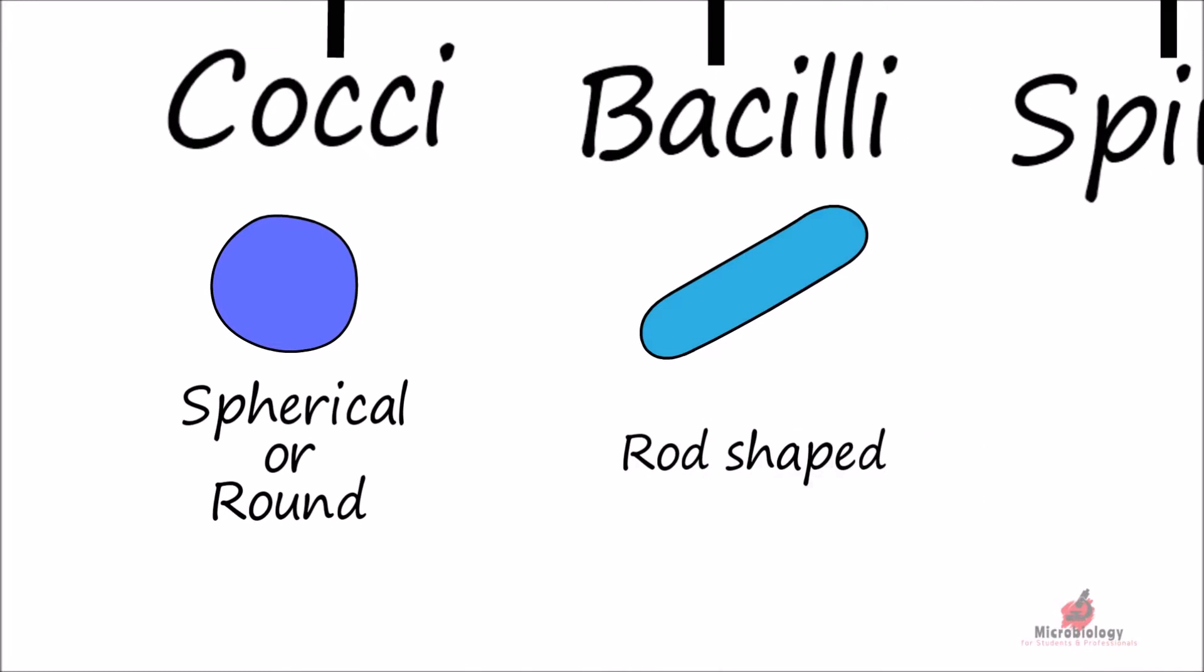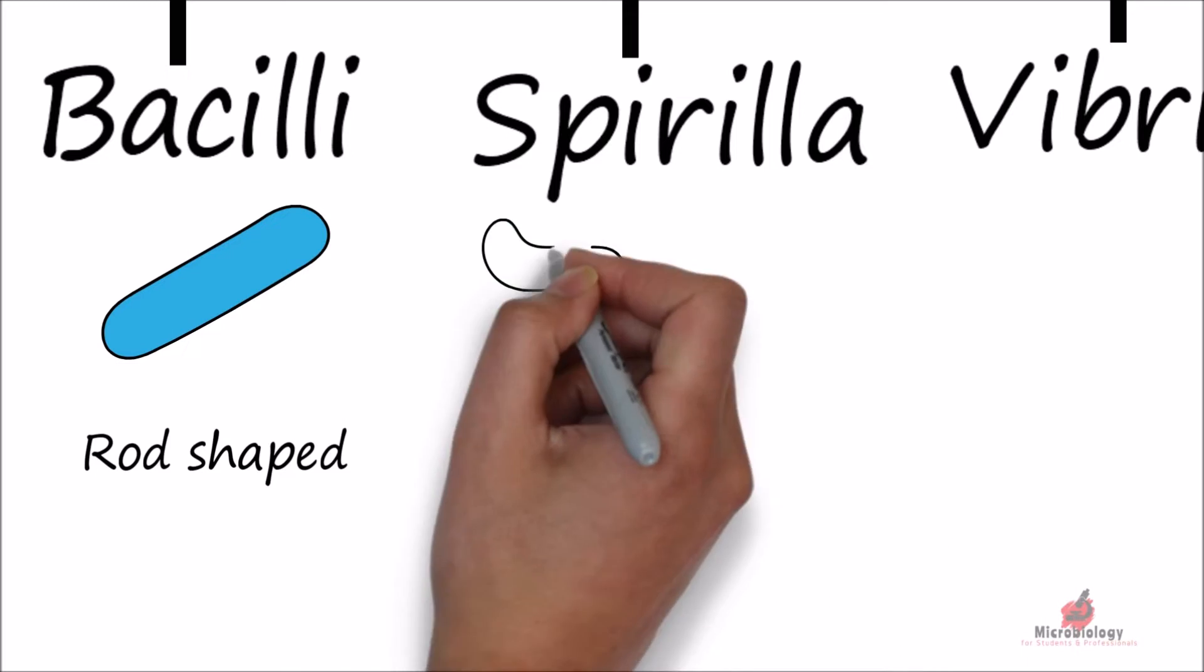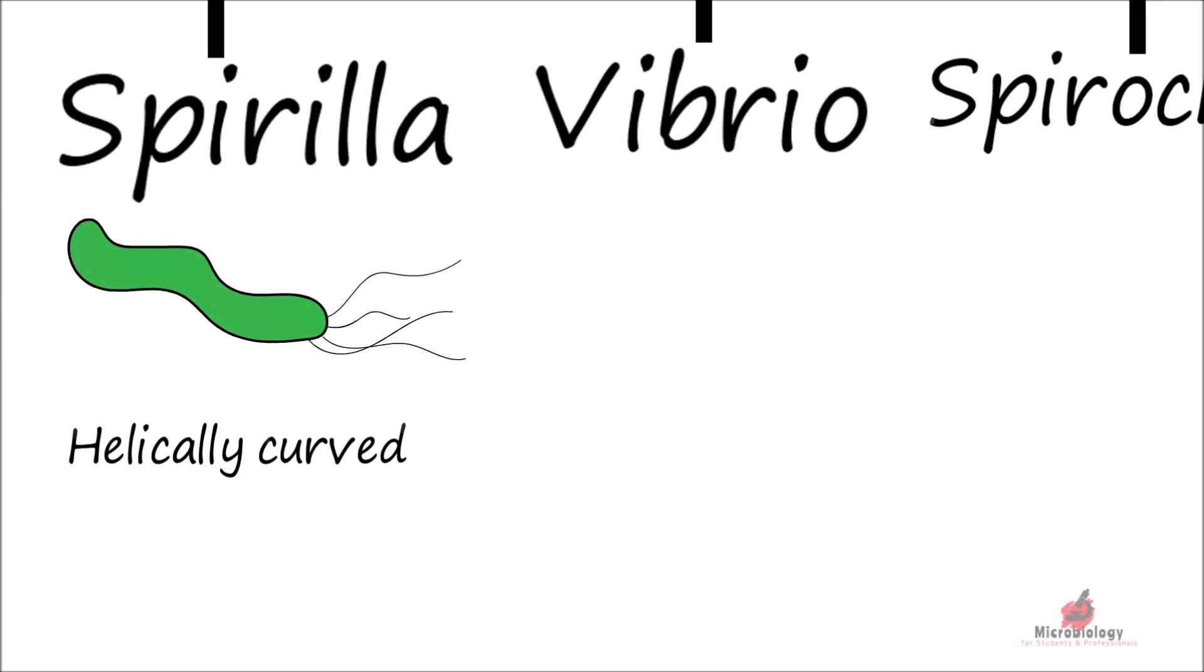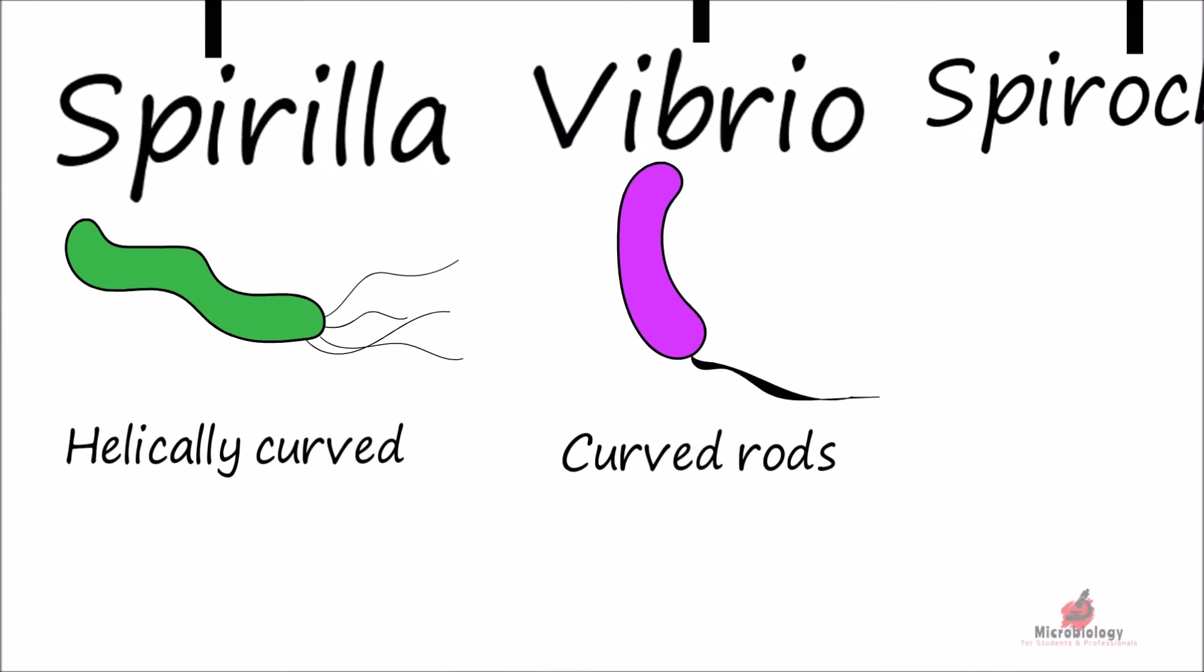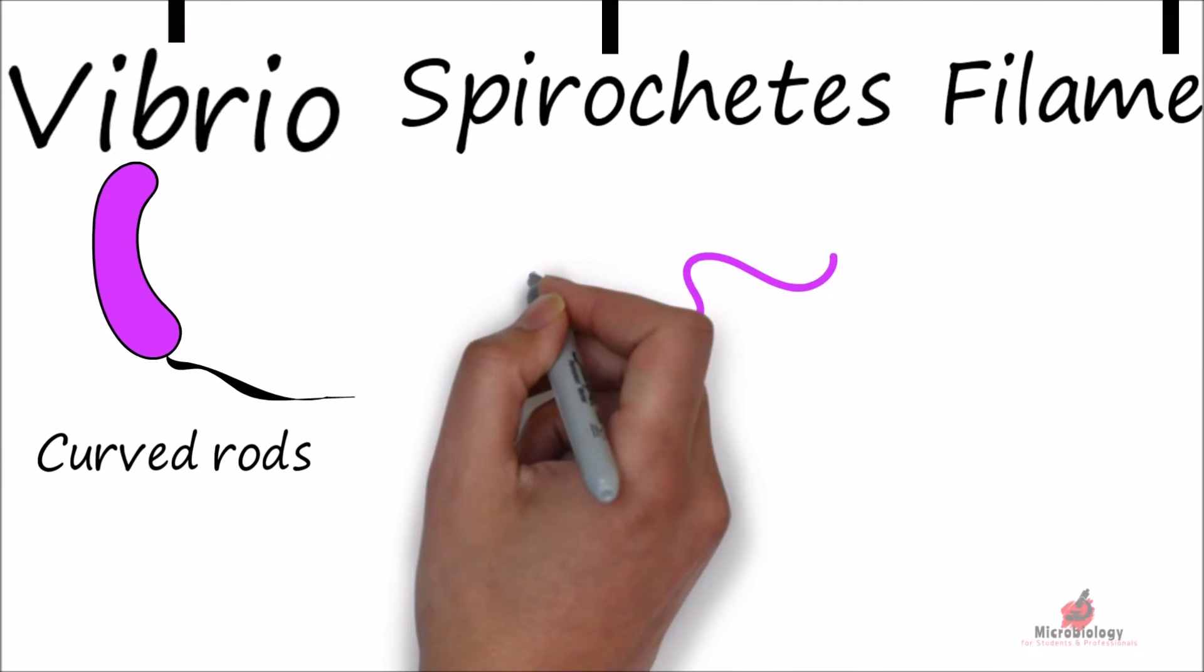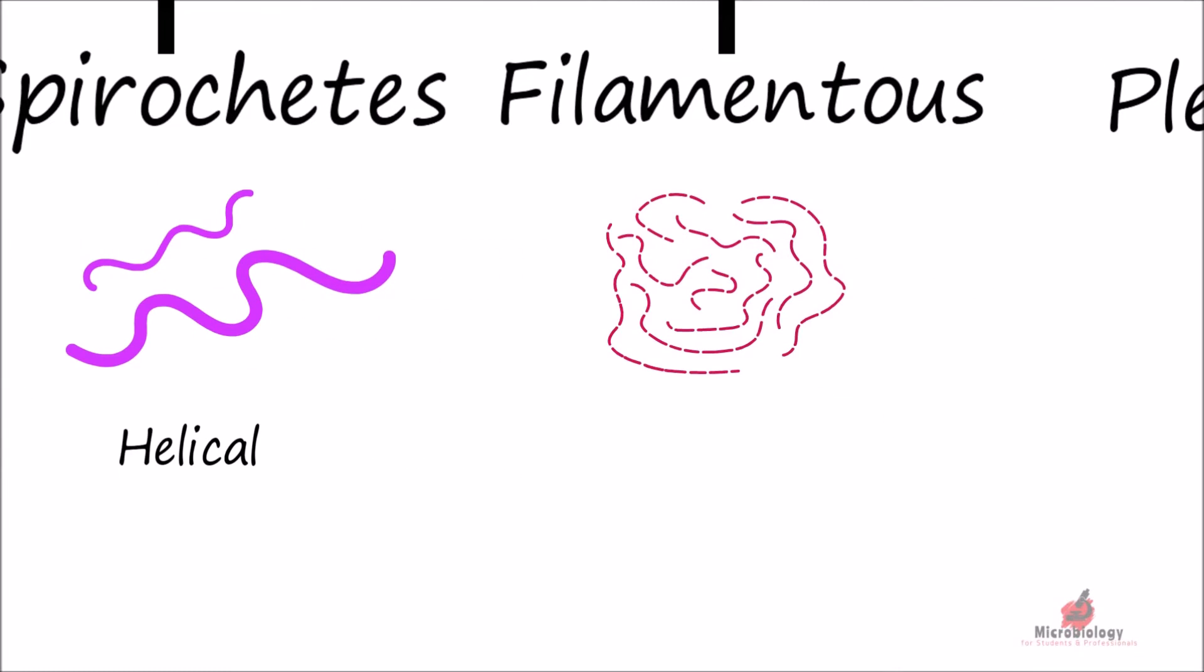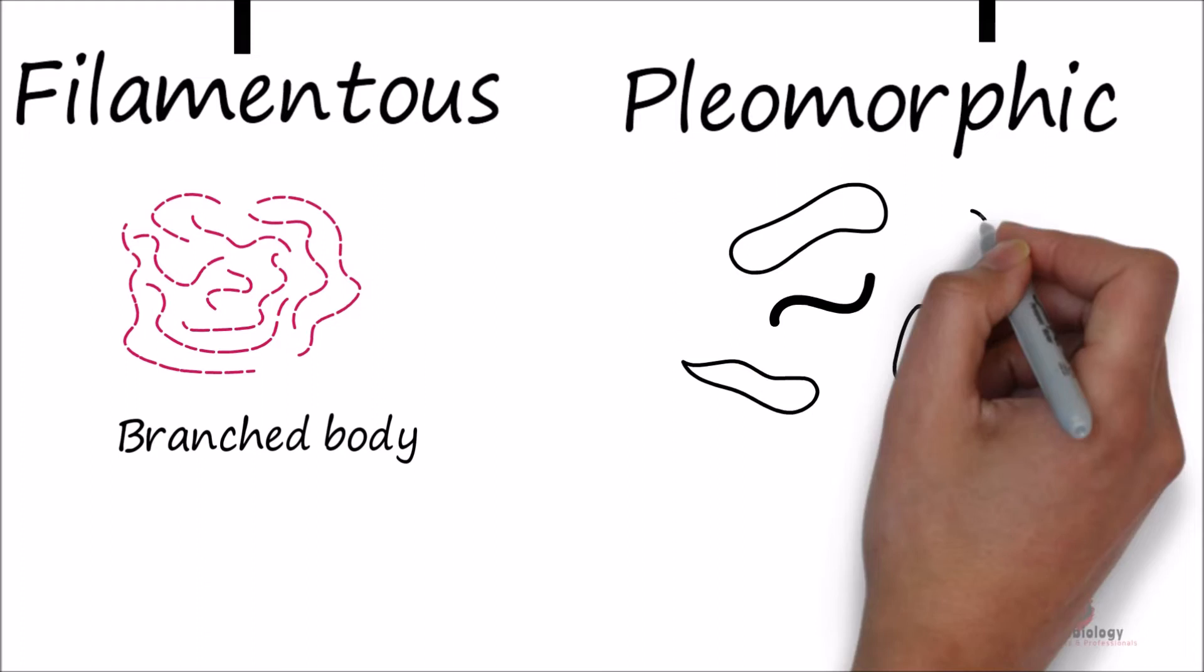Bacilli are rod-shaped. Spirilla are rod-shaped bacteria that are helically curved. Vibrio are slightly curved rods. Spirochetes are helical in shape due to their flexible cell wall. Filamentous are bacteria that develop filamentous or branched body. Pleomorphic are bacteria that occur in different shapes.